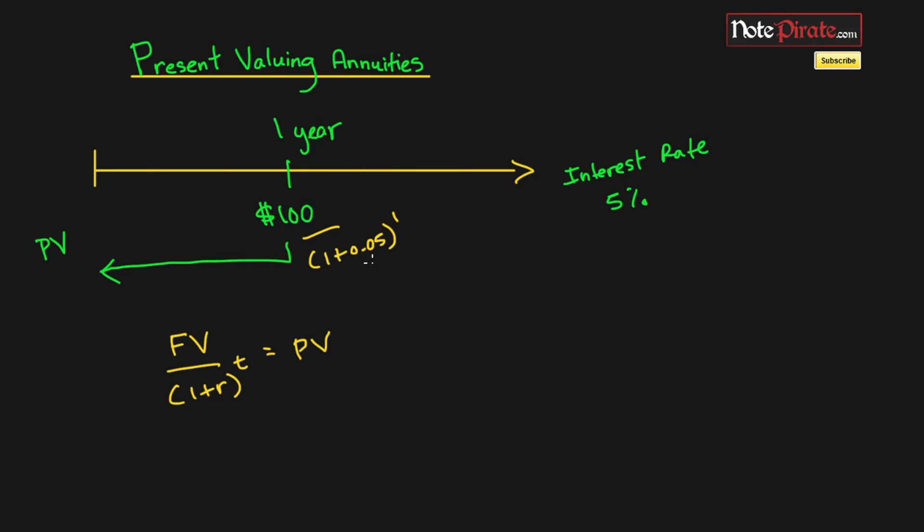Since we're one year from the present day, that's going to be the same as 100 divided by 1.05 to the power of 1, and that will give you a figure that is $95.24. And the interest rate can sometimes also be called the discount rate. It can also be called the rate of return.